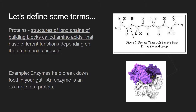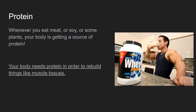One example of a protein is an enzyme. An enzyme is a special protein that catalyzes a reaction, or makes a reaction go faster. There are enzymes in your gut, for example, to help break food down. Whenever you eat meat, soy, or some plants, your body is getting a source of protein. You need protein to rebuild muscle tissue — that's why bodybuilders drink lots of protein, because they want to get their muscles larger.